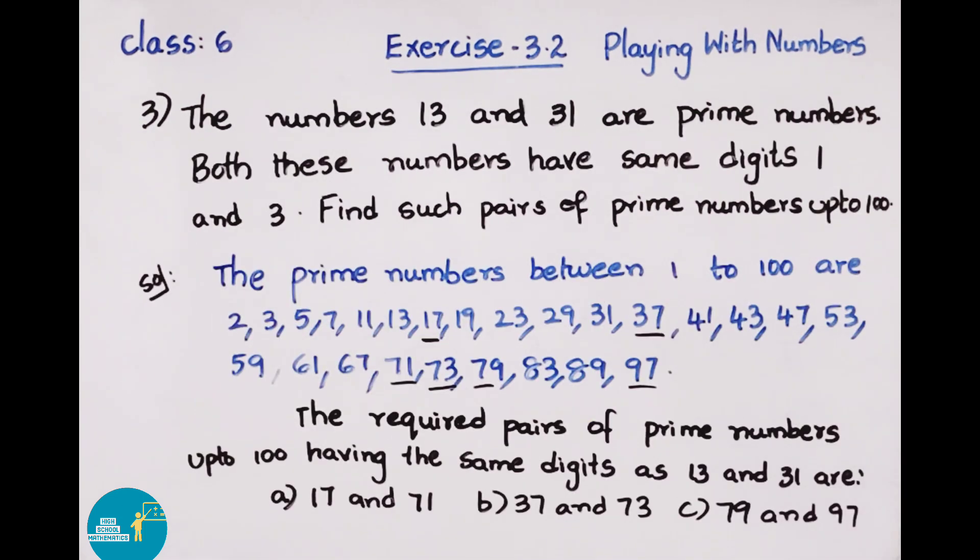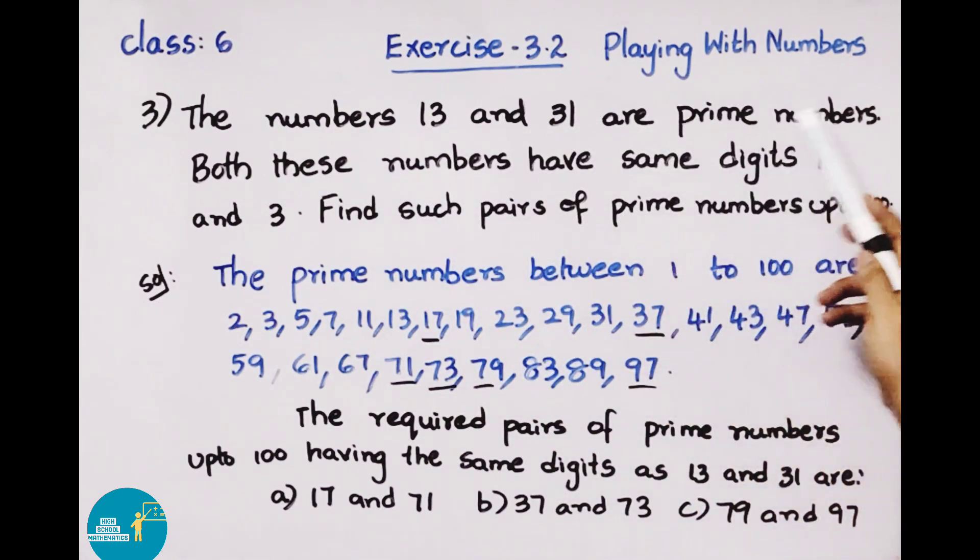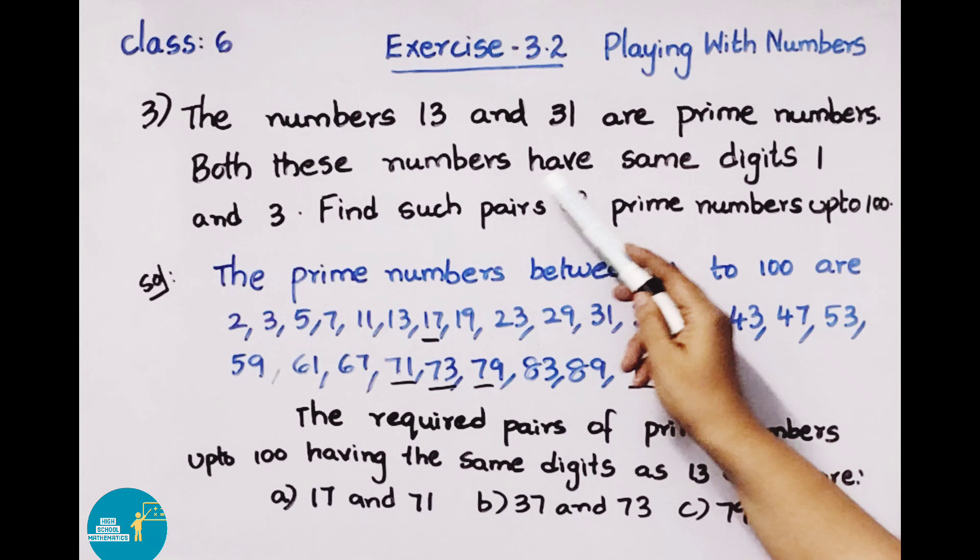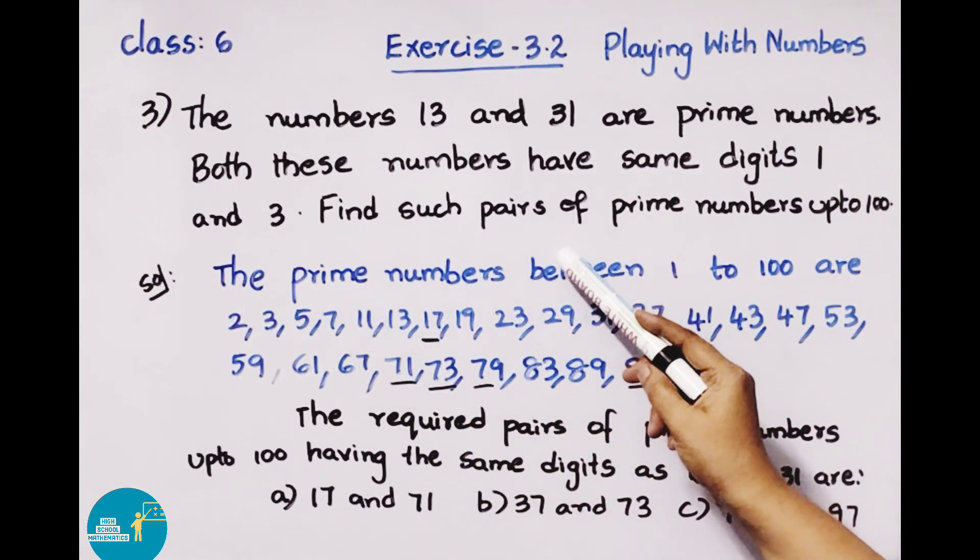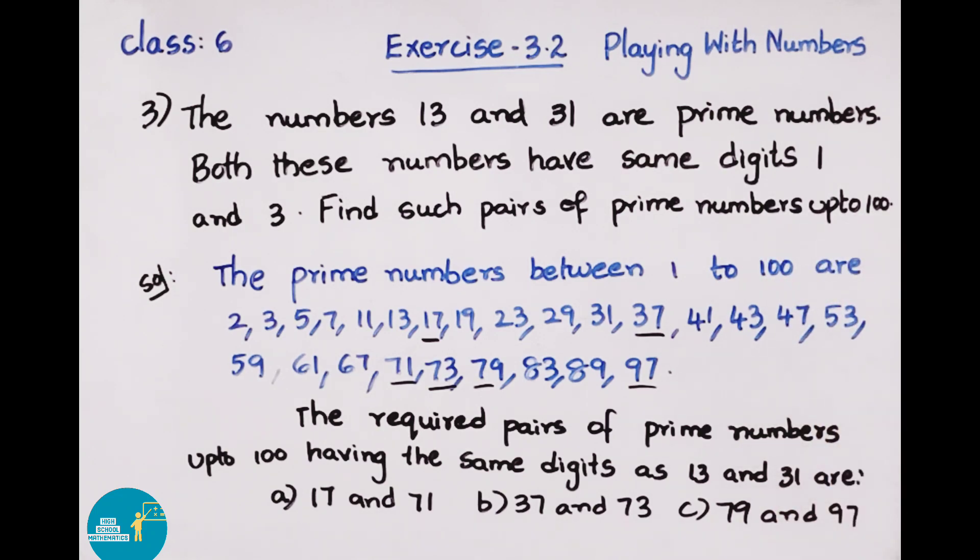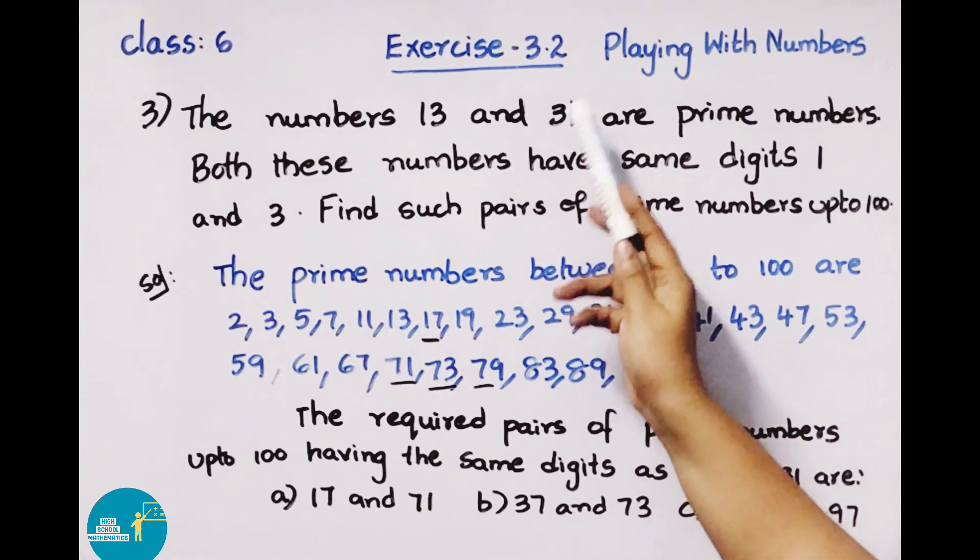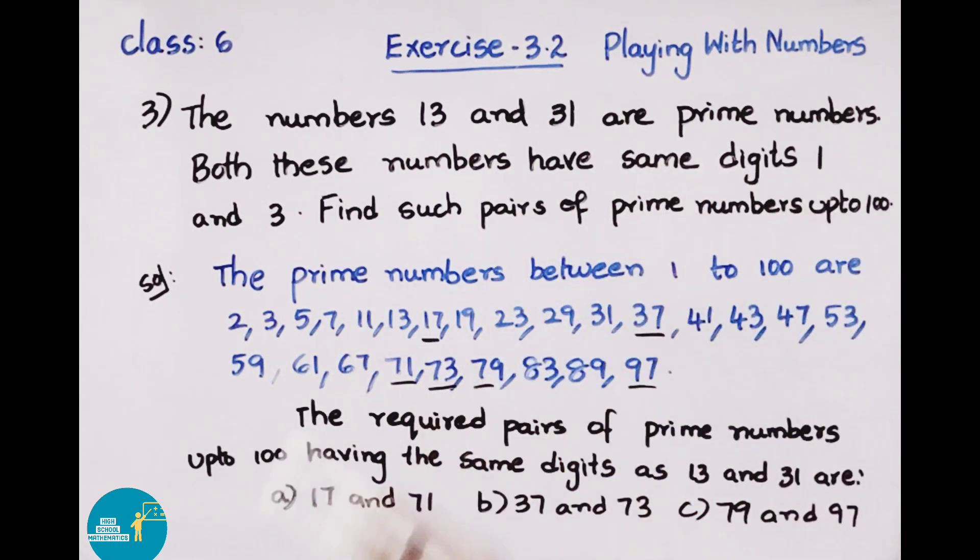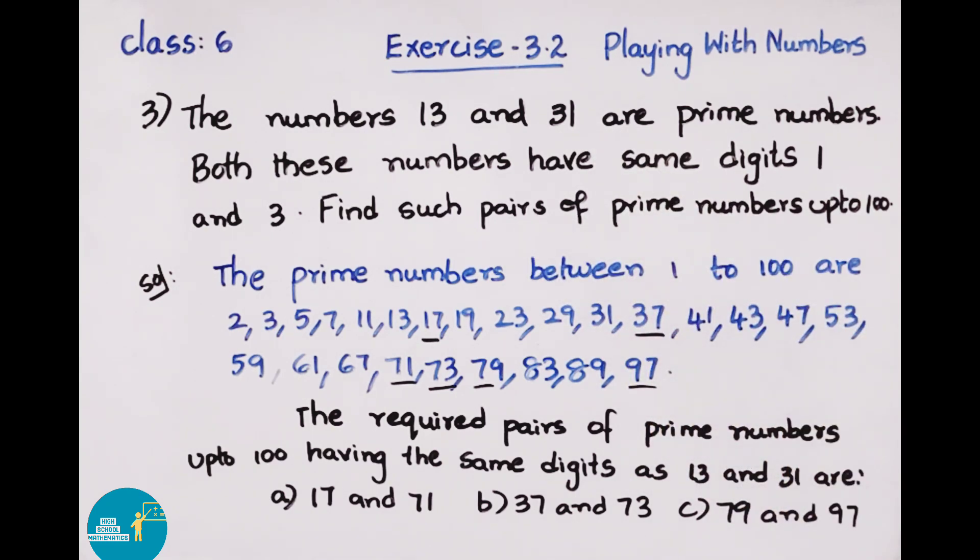Third question: The numbers 13 and 31 are prime numbers. Both these numbers have same digits 1 and 3. Find such pairs of prime numbers up to 100. In this question, 13 and 31 are two prime numbers with the same digits 1 and 3. We need to find if there are such pairs in prime numbers up to 100.